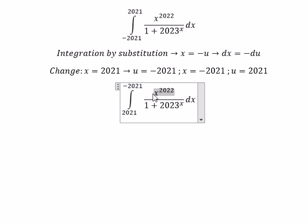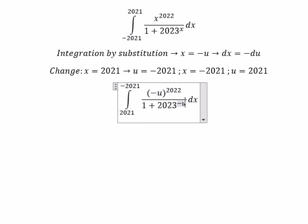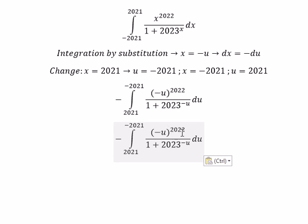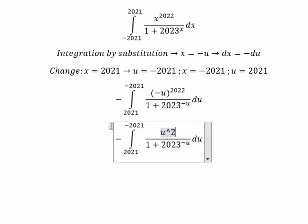This one we substitute negative u for x, and this one also goes to negative u. And ds we change to negative du. Because the power is an even power, so we get u to the power of 2022.